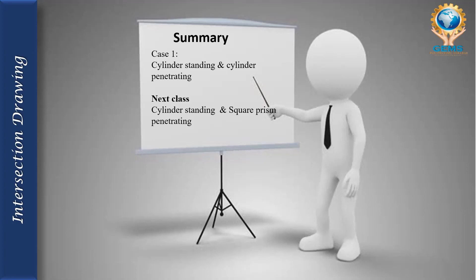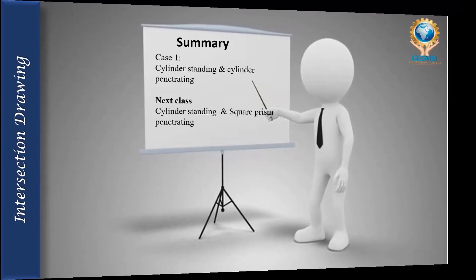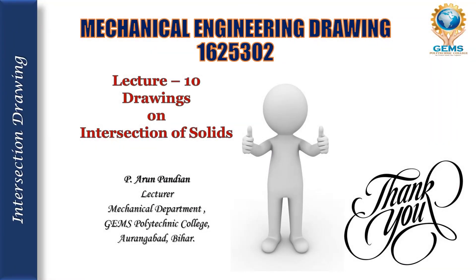In summary, we have seen how to draw cylinder standing and cylinder penetrating. There are different cases in intersection of solids — this is the first case. In the next class, lecture 11, we will see another drawing: cylinder standing and square prism penetrating. If you have any doubts or suggestions, put them in the comment box. Thank you all. See you in the next lecture.